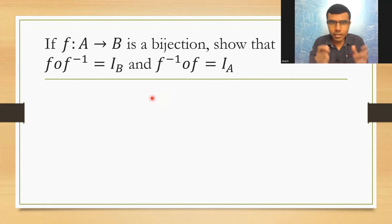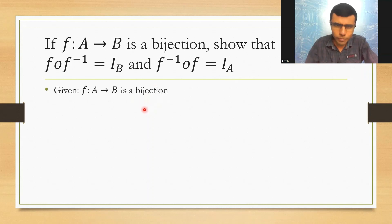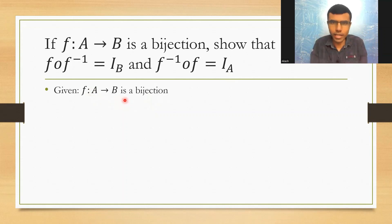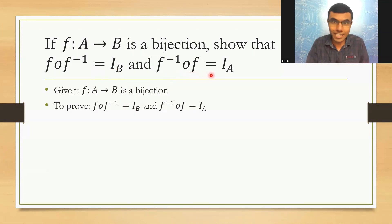In any proof, it's always better to first write what is given, next write what we need to prove, and then begin with the proof. We are given that F maps A to B is a bijection. Based on that, I need to prove two things: F∘F⁻¹ = I_B and F⁻¹∘F = I_A.